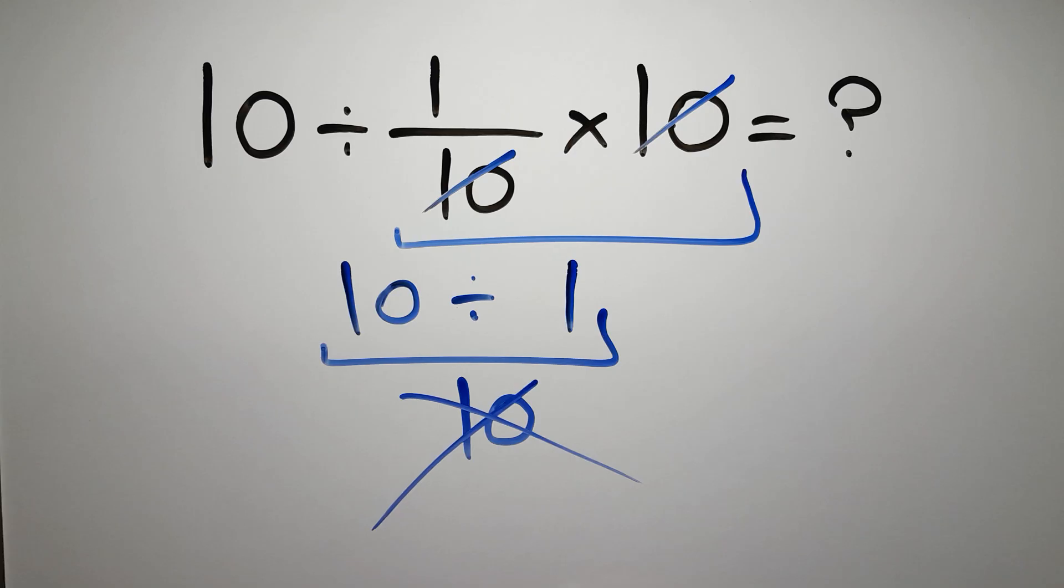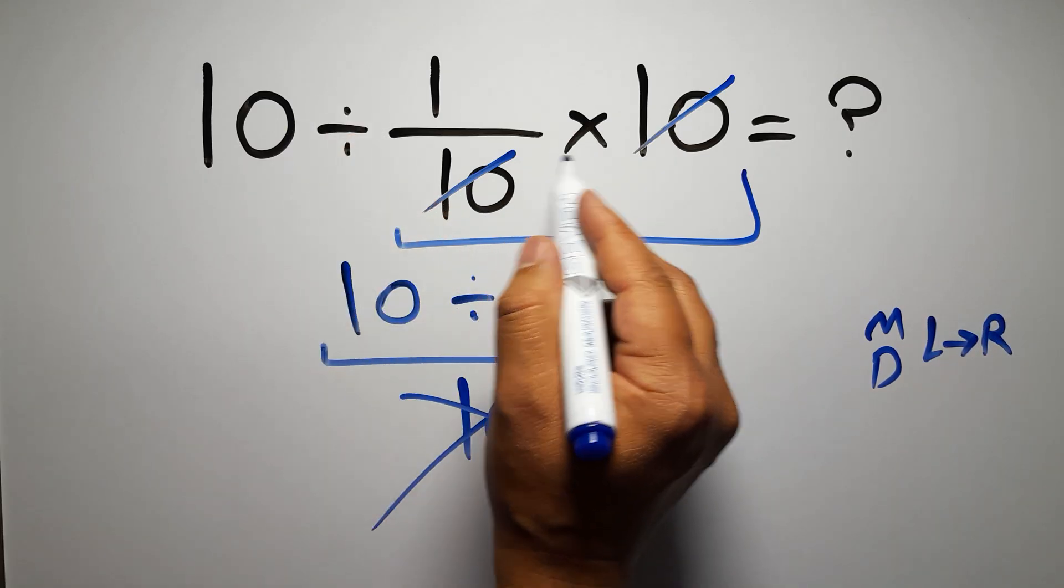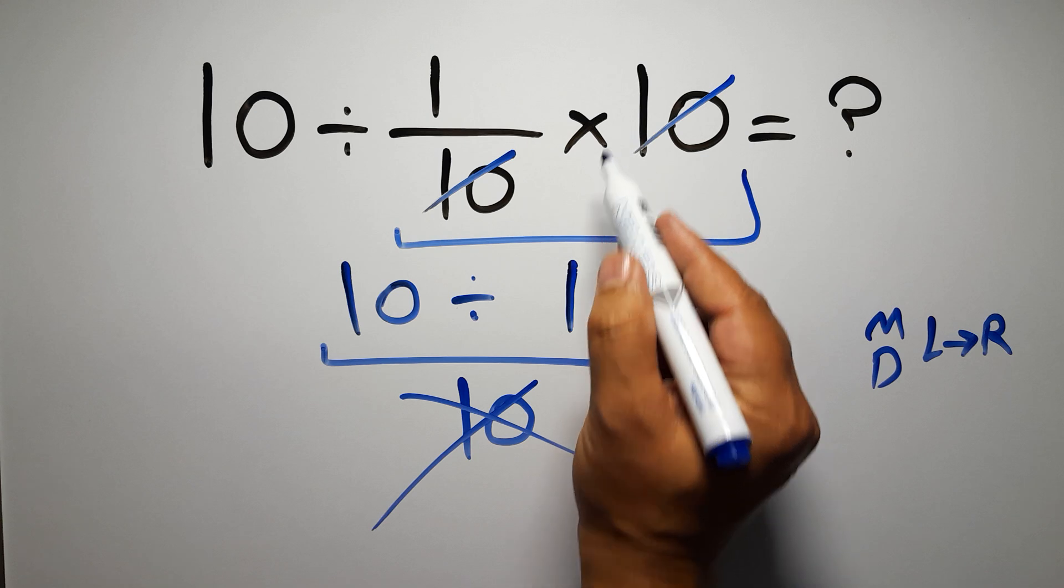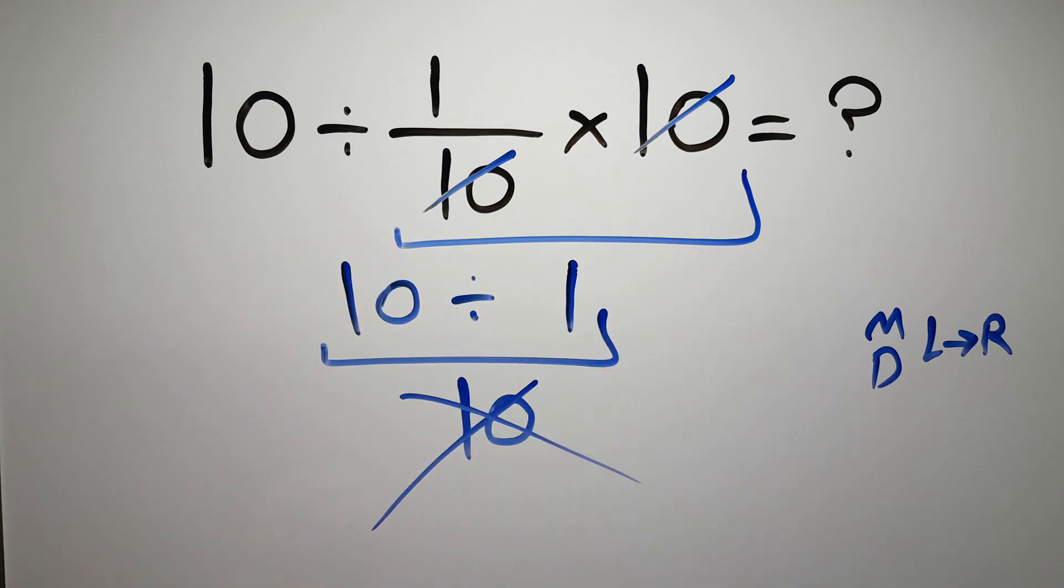Because according to the order of operations, multiplication and division have equal priority and we have to work from left to right. So here first we have to do this division, then this multiplication. If we do this multiplication before this division, it is wrong.